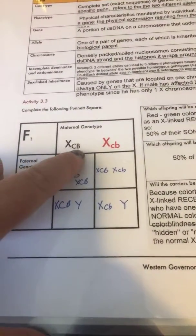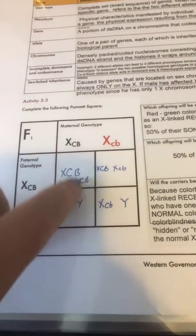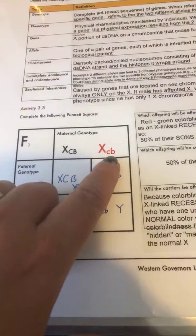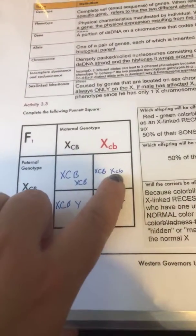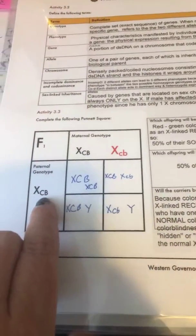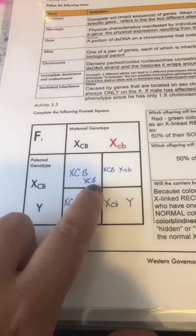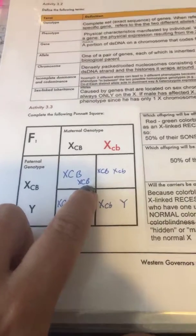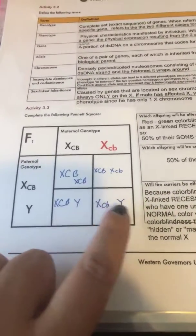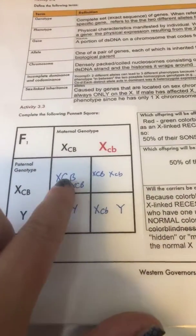You're going to take the X-CB and put it in each of these two columns — you drag it down. Then the X little c little b in the same, so you drag it down. Then you do the same for over here. You have an X, big C, big C, so you're going to have it here and there. And then the Y just carries over because there's no traits. And that's how you get the Punnett square.